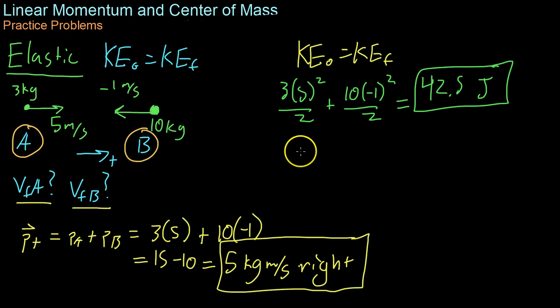And then because we'll have two equations with two unknowns, we can then solve for those quantities. So we know that 3 times the velocity of A plus 10 times the velocity of B will equal 5 because that's the total momentum. And we know that 3 times the velocity of A squared over 2 plus 10 times the velocity of B squared over 2 will be 42.5.